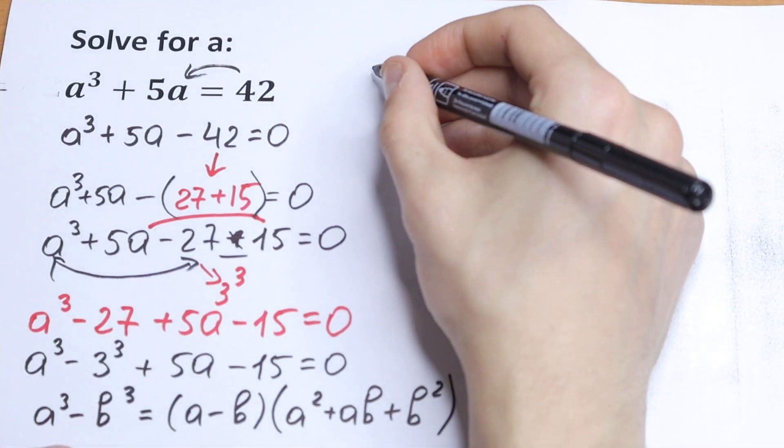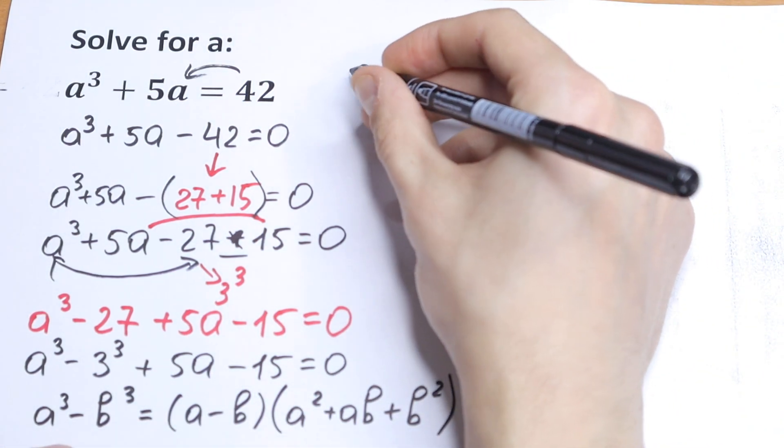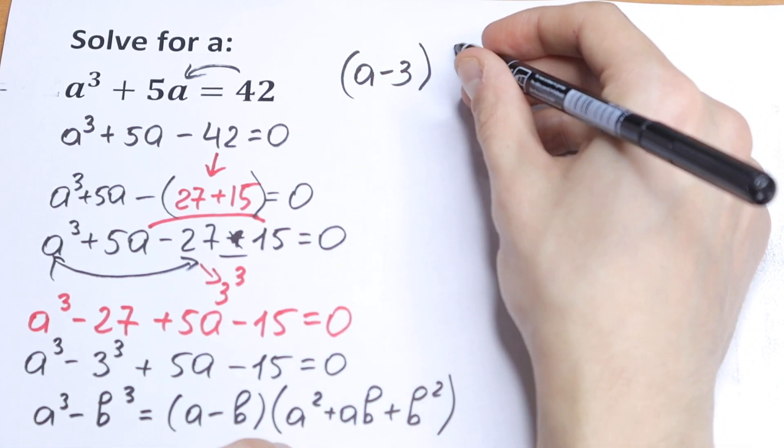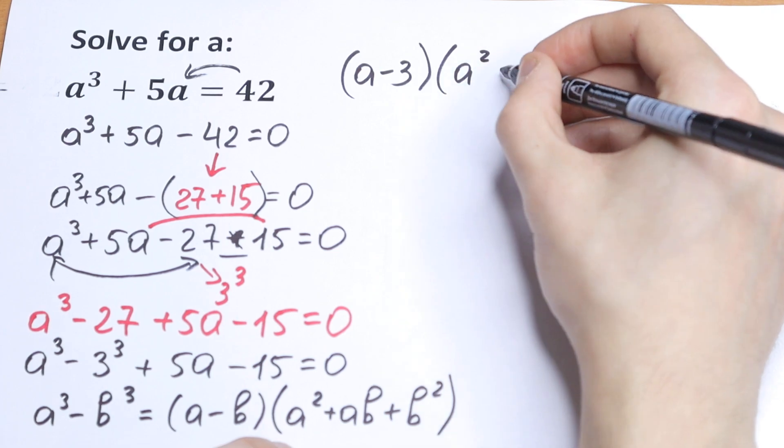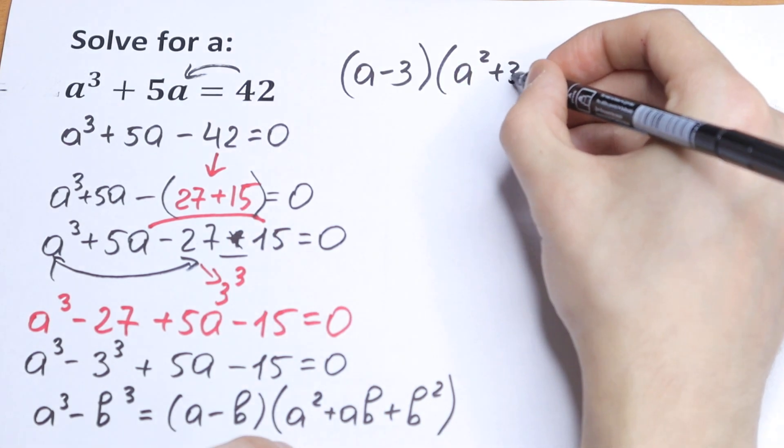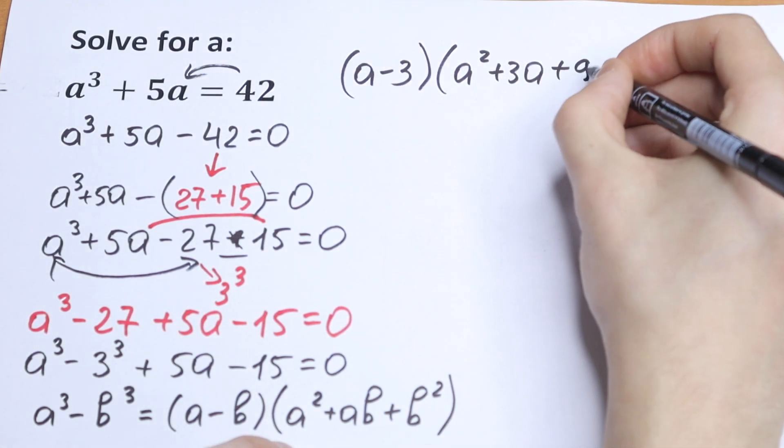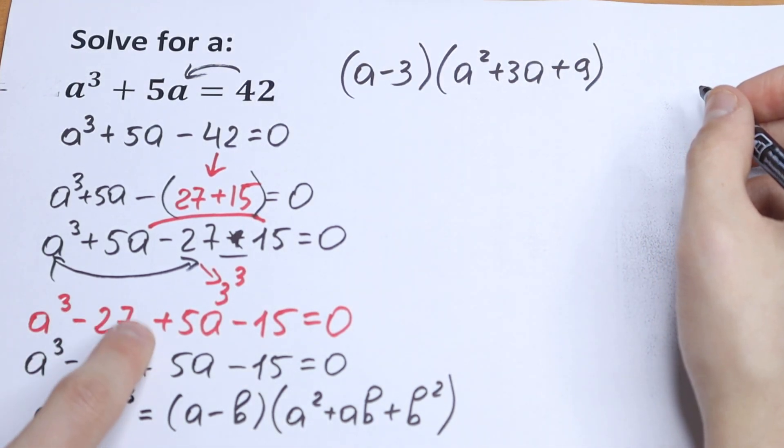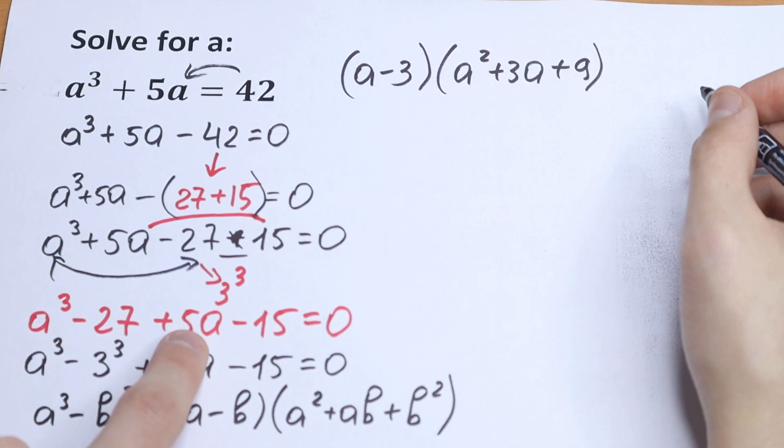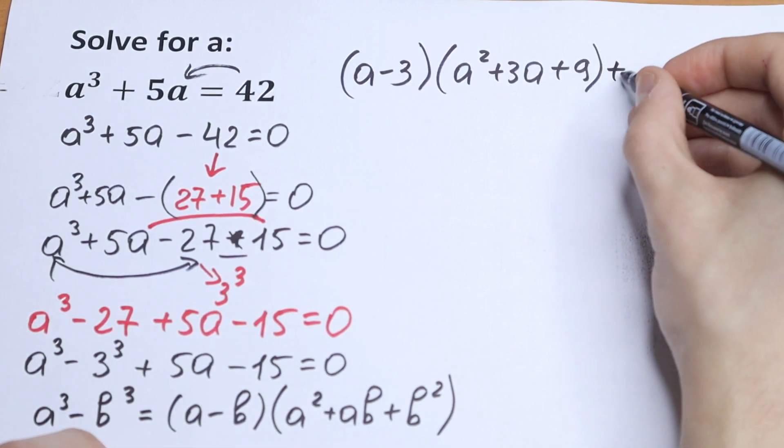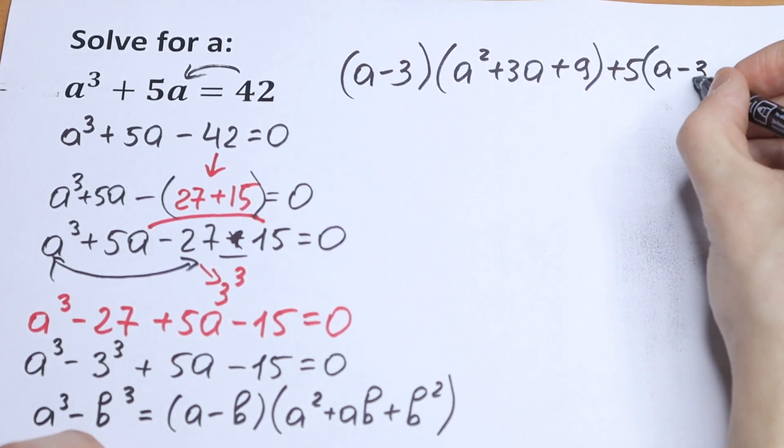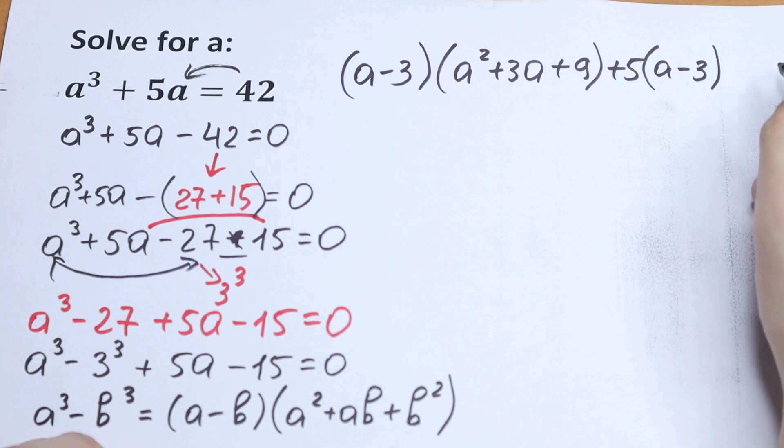As a result we will have a minus 3 and in second parentheses we will have this thing, we will have a² plus 3a and plus 9. Okay, this will be our first formula. Take a look right here. 5a minus 15, we can factor out 5, plus 5. And in parentheses we will have a minus 3 equal to 0.